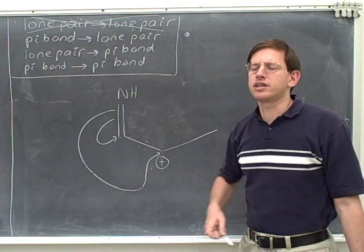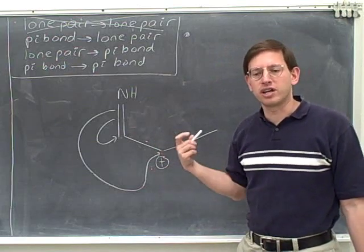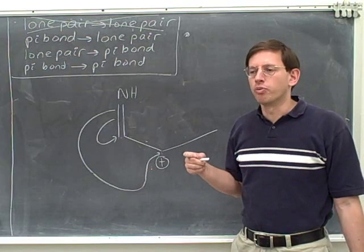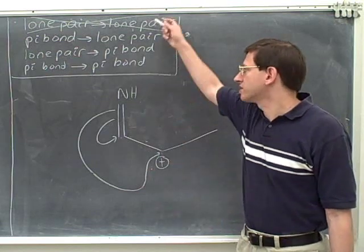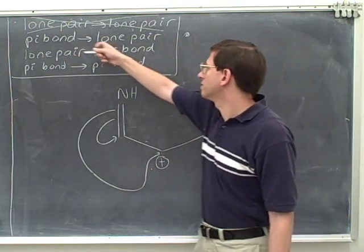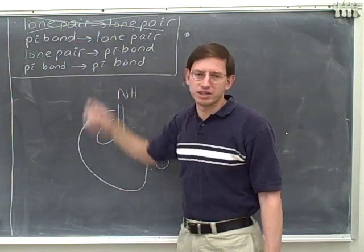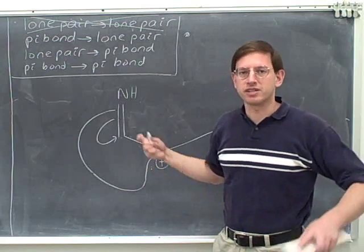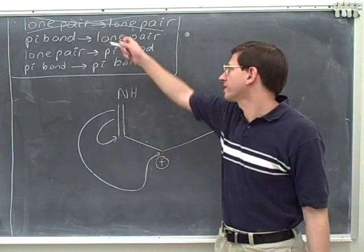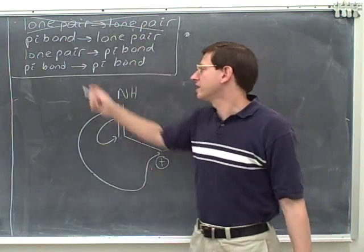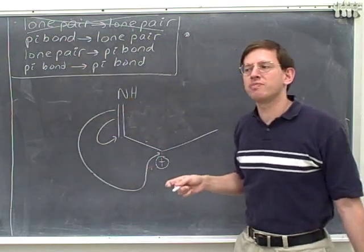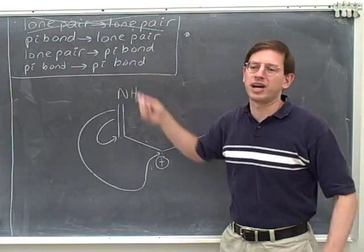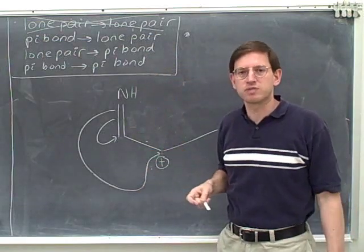When is it correct to use the as close as possible rule? The as close as possible rule is what you want to use when you're comparing two arrows of the same type — for example, two arrows which are both moving a pi bond into a lone pair. You can't use the as close as possible rule to compare two arrows of different types. So if you have one arrow that's moving a pi bond into a lone pair, and another arrow that's moving a pi bond into a pi bond, you can't choose between those by saying the lone pair is closer than the pi bond. That's not the way this principle is supposed to be used.